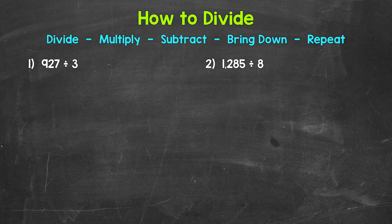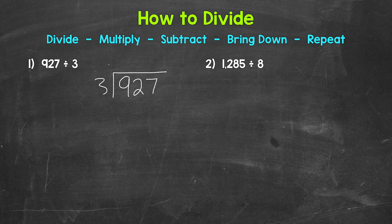Let's jump into number one, where we have 927 divided by 3. The first thing we need to do is set this problem up. 927 is our dividend — it's the number being divided, so it goes under the division bar. And then 3 is the divisor — it's the number we are dividing by, so it goes on the outside. Now we are ready to go through our division steps.